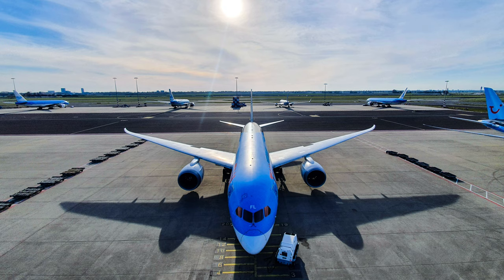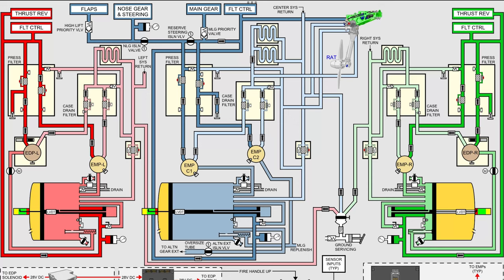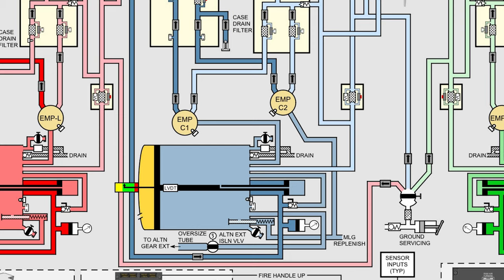Because the 787 has two engines and three hydraulic systems, the center system has two electric motor pumps. During flight, one always operates and one is a demand pump. This means that this pump switches on when there's a higher demand in the system.